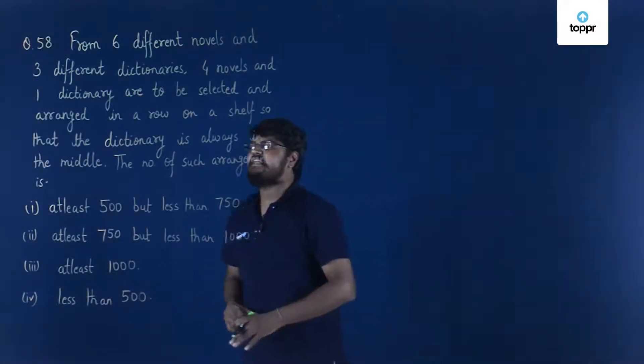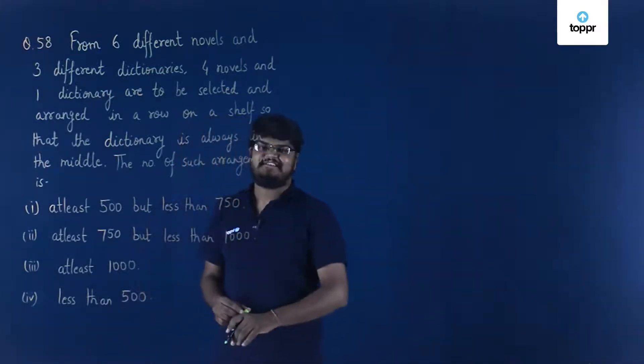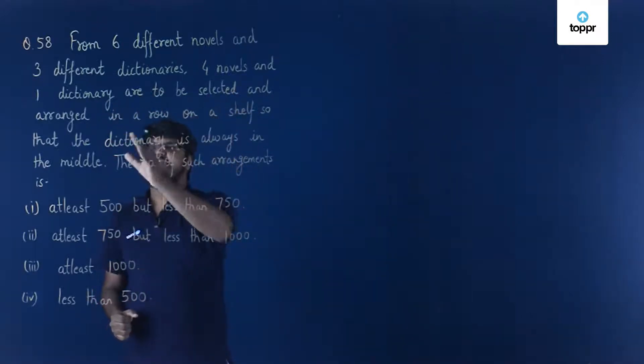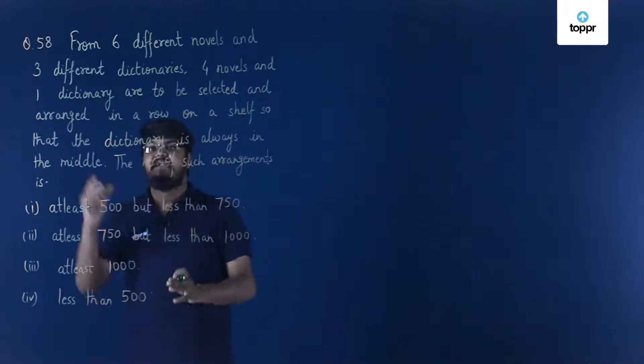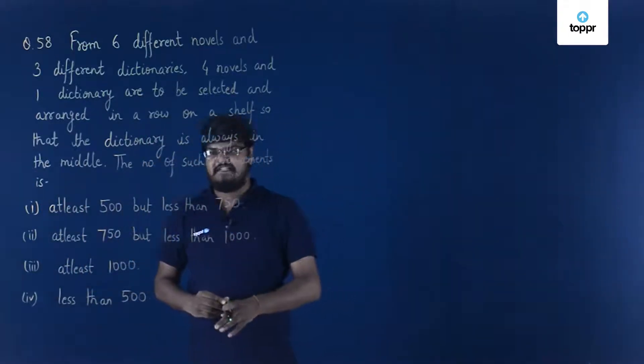Hey everyone! Let us now take a look at this question number 58 from set B of J.E. Mains 2018. From six different novels and three different dictionaries, four novels and one dictionary are to be selected and arranged in a row on a shelf so that the dictionary is always in the middle.